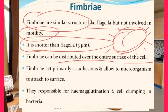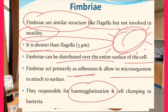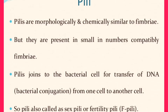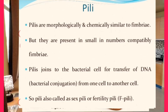Fimbriae are not responsible for motion. They are only responsible for cell attachment — adherence to surfaces — and they are also responsible for the hemagglutination process, which is the cell clumping process of bacteria. So you can see that fimbriae and flagella are two different things, differing in their functions, their numbers, and their structures.